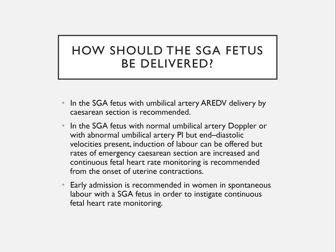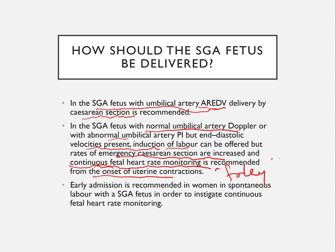How should we deliver? If the baby's umbilical artery Dopplers show absent or reversed flow, deliver by caesarean section. If umbilical artery Dopplers are normal or abnormal but end-diastolic velocities are still present, induction can be considered, though emergency section rates are increased. If inducing with prostaglandins or Foley catheter, continuous fetal heart rate monitoring is needed. A Foley catheter is a good option for small-for-dates babies. Generally, these women are admitted early and monitored for spontaneous labour if willing for vaginal delivery.